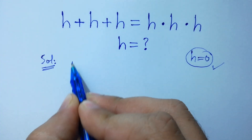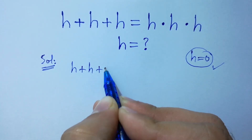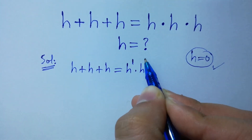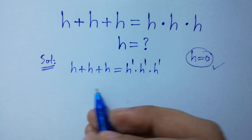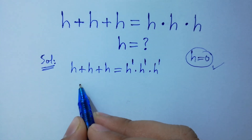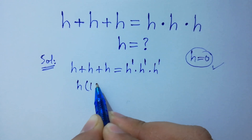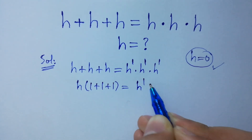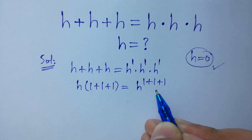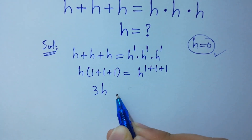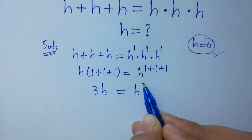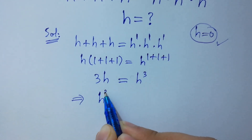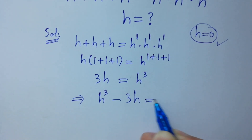We have h plus h plus h equal to h¹ times h¹ times h¹. If we factor h on the left side, we have h times (1 plus 1 plus 1), and on the right side h to the power (1 plus 1 plus 1). We get 3h equal to h cubed, which is the same as h cubed minus 3h equal to 0.